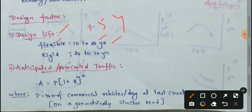For village roads, other district roads, and major district roads, the design life is 10 years. For rigid pavements — such as CC roads and RCC roads — the design life is 22 to 30 years as per IRC. High-volume roads are designed for 30 years, and low-volume roads for 20 years, as per IRC.